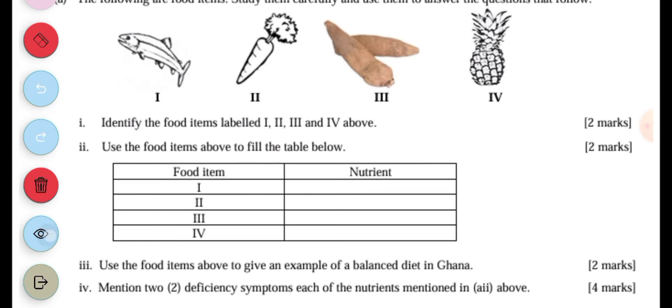The next question is, use the food items above to give an example of a balanced diet in Ghana. So, you can prepare yam with carrot stew and then fish, then you can have the pineapple juice after eating the meal.